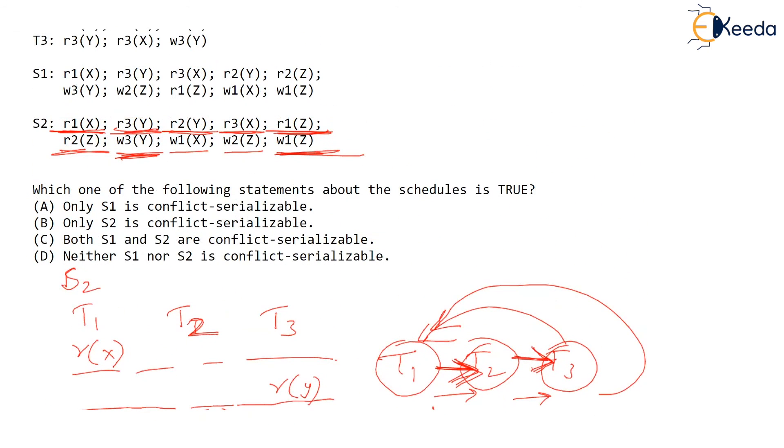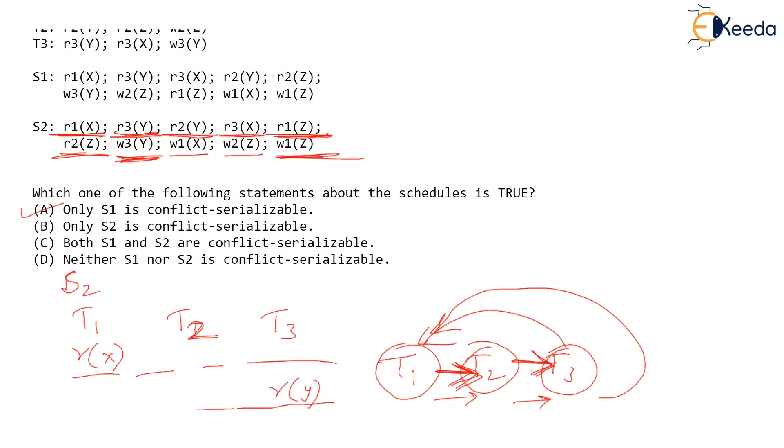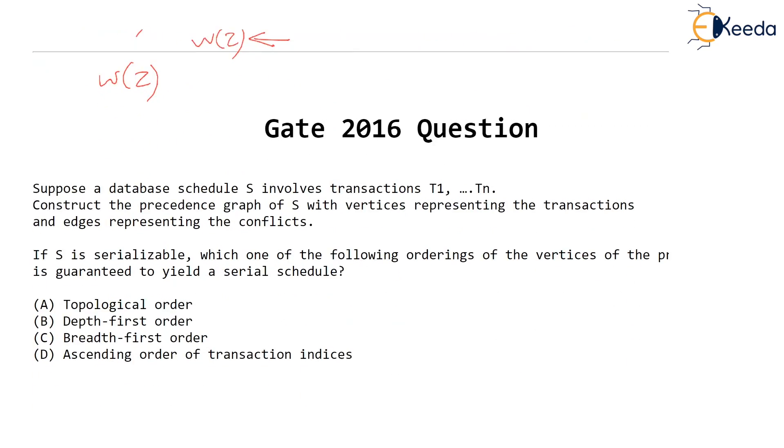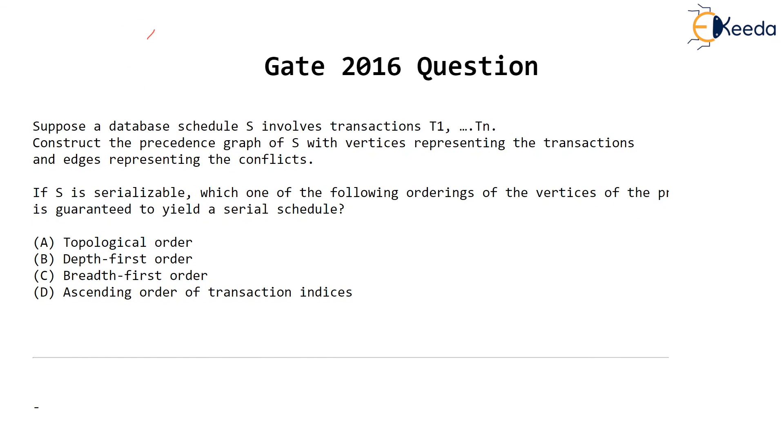So the answer is: only S1 is conflict serializable — option A is the answer. I hope you are understanding this and how to check whether a schedule is conflict serializable. Let's meet in the next video where we will solve more GATE questions. Thank you very much.